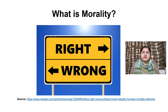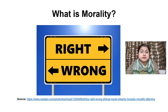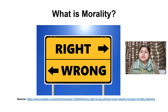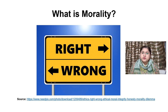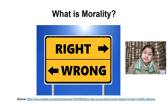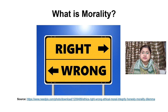First of all, whenever we are talking about this moral development theory of Kohlberg, we have to see what exactly morality is and why we are going to discuss all these things. Morality is basically the recognition of the distinction between good and evil or between right and wrong, respect for and obedience to the rules of right conduct, and the mental disposition of behaving in a manner intended to produce good results.